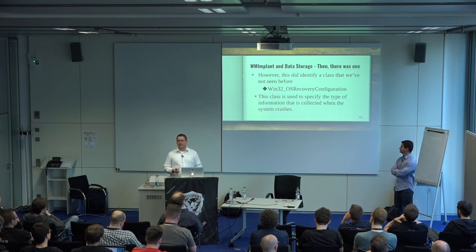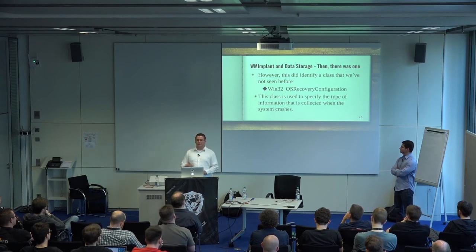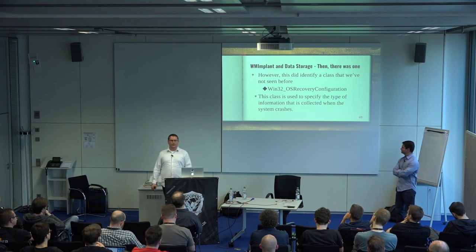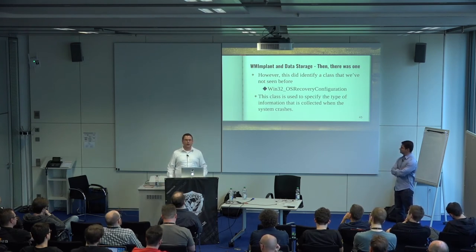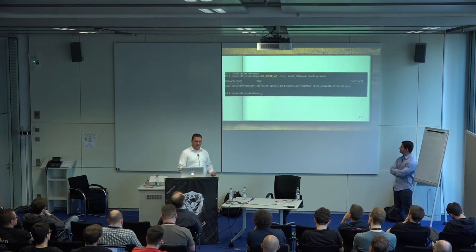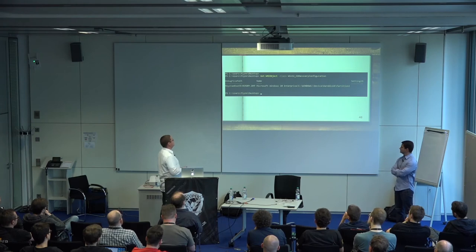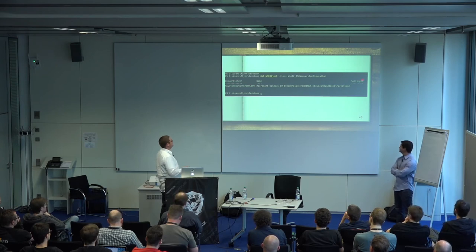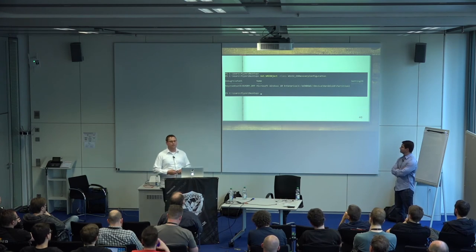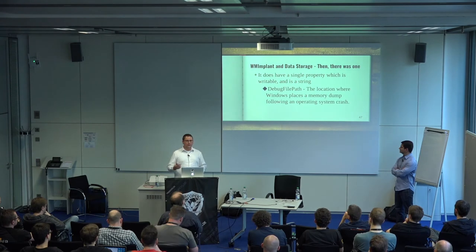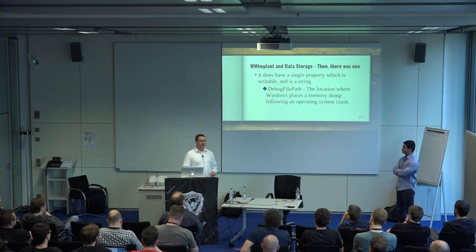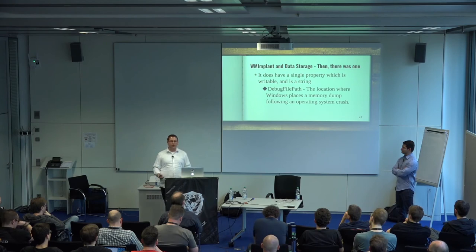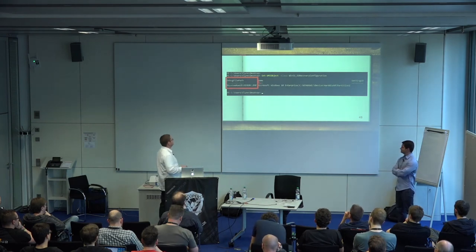Win32_OSRecoveryConfiguration specifies the type of information collected when your system crashes. When you get a blue screen, it tells the OS where to place the memory dump. The object has attributes like a DebugFilePath and a name. We found a single writable string property: the DebugFilePath — the path that tells the OS where to place the memory dump on a blue screen. It's currently set to %systemroot%\memory.dmp.